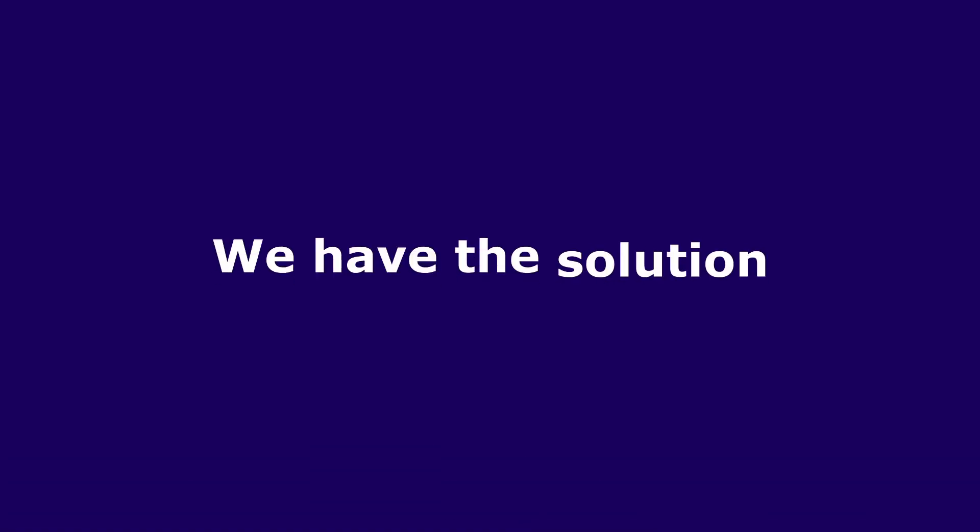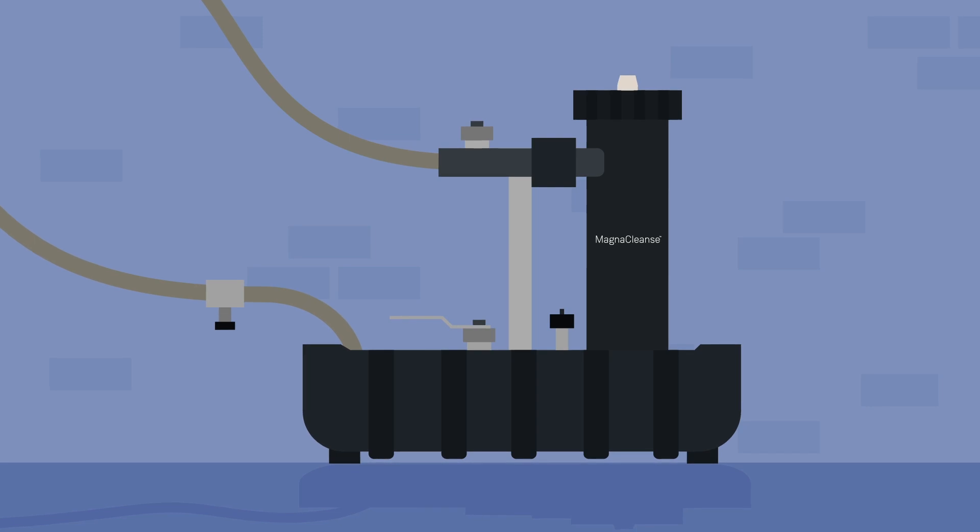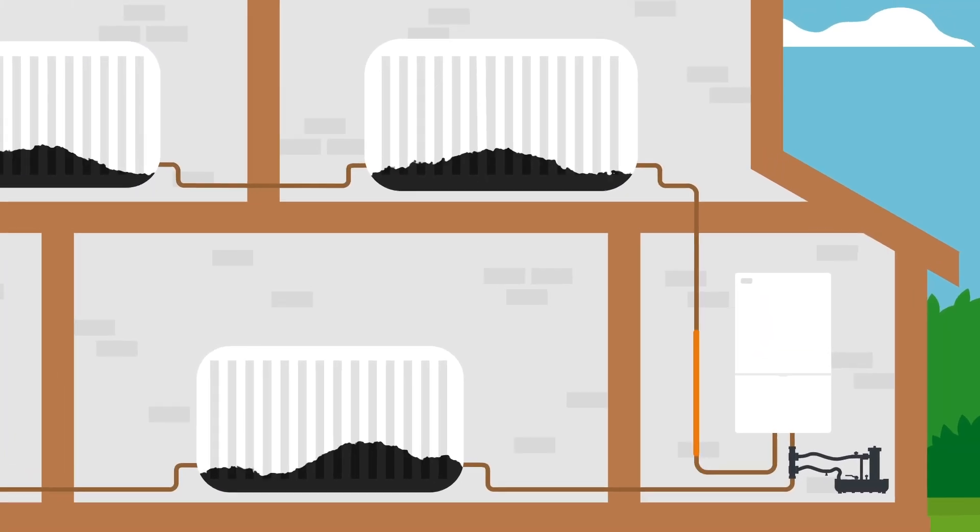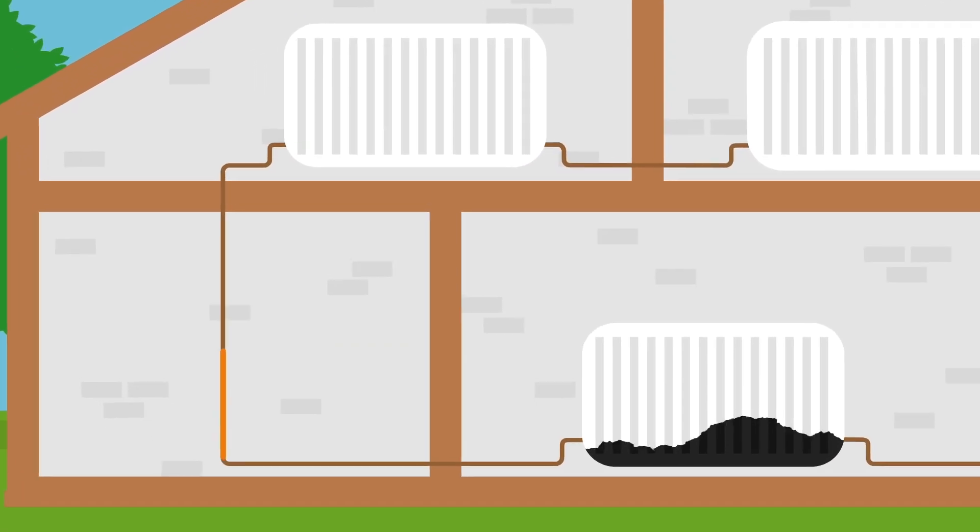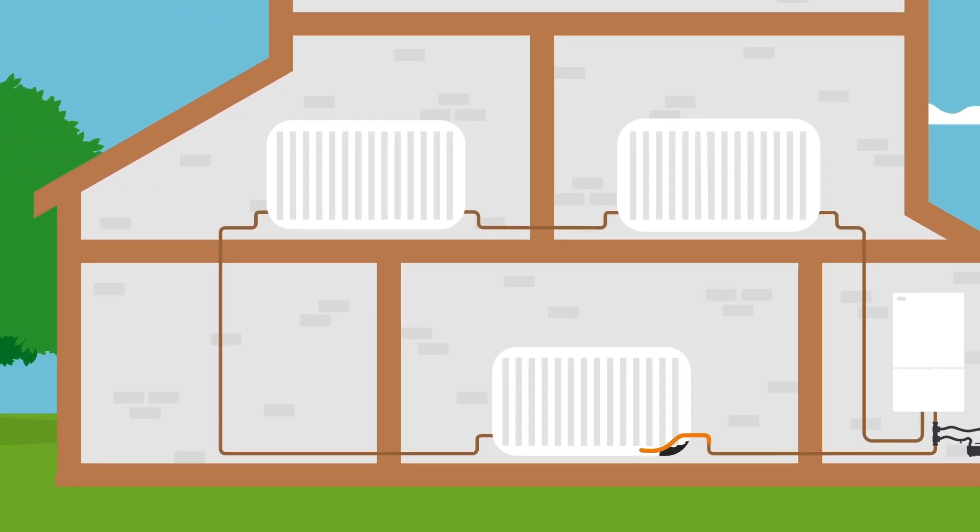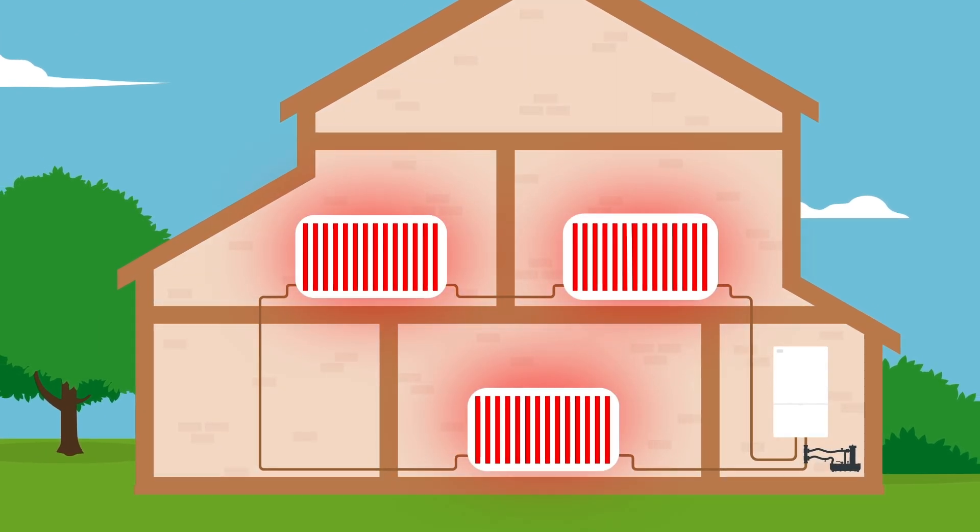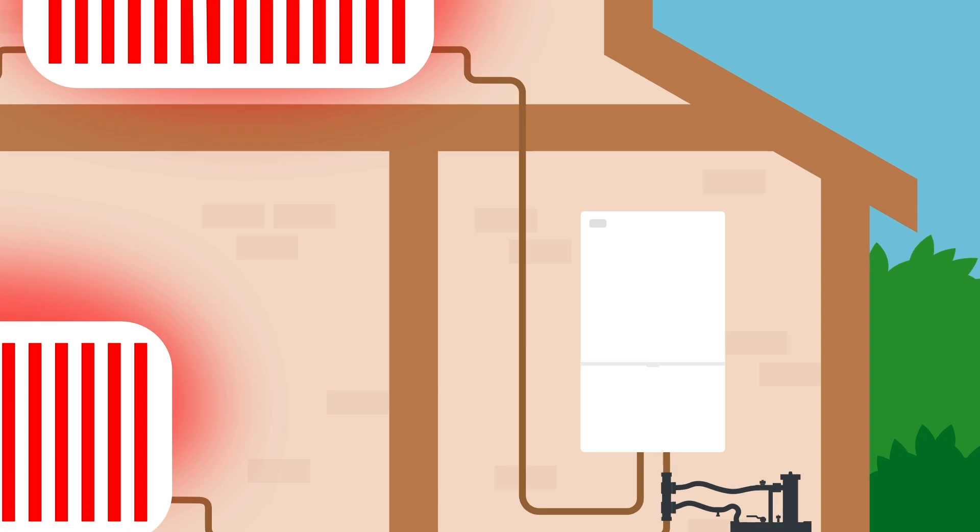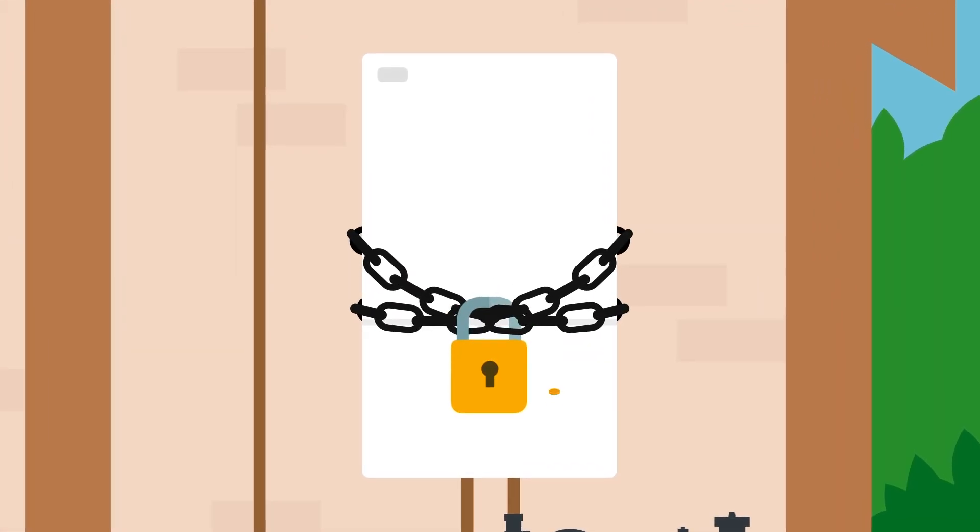We have the solution. Sludge can be removed quickly and effectively with an AD Magnetic Lens Rapid Flush. This environmentally friendly process provides the solution for the removal of sludge and ongoing protection of your central heating system, meaning you can heat up your home faster and waste less energy while reducing wear and tear and protecting your boiler.